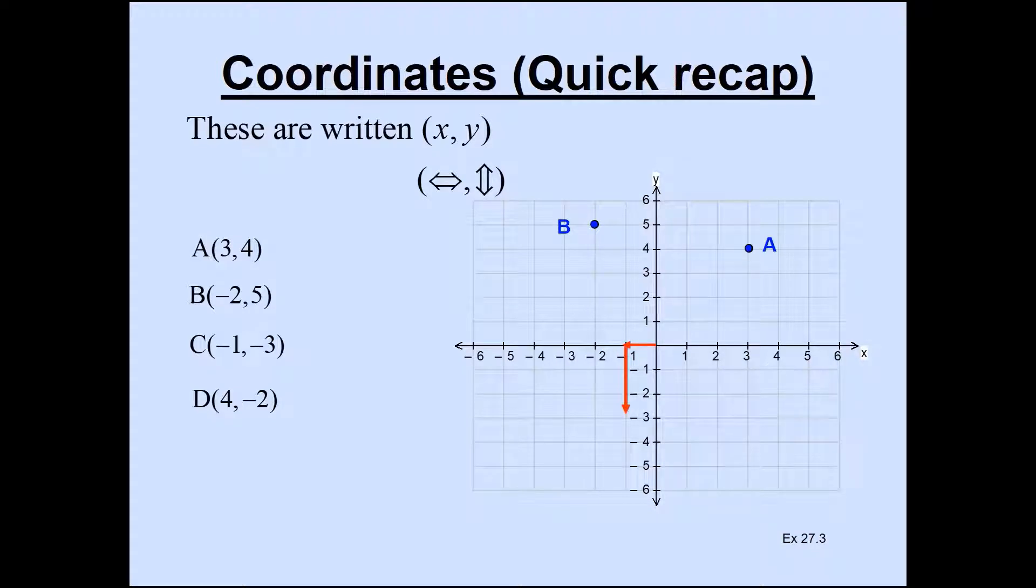Likewise we can do the third one. So negative 1 and then 3 down. And that's point C. And the last one we've got 4 across and 2 down. And that's where point D is.